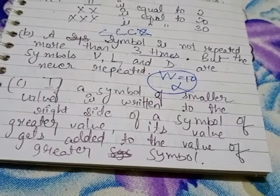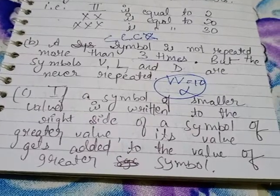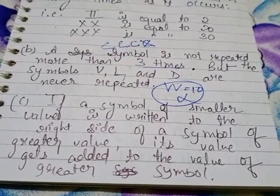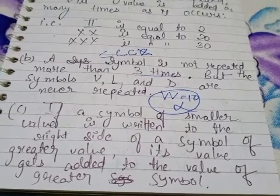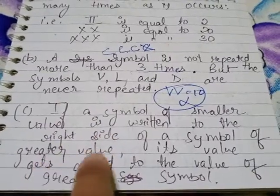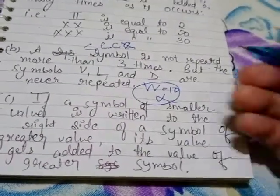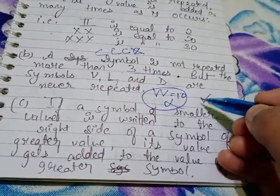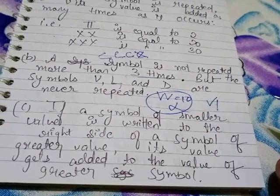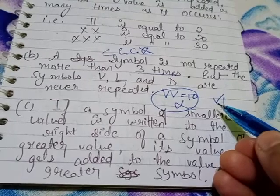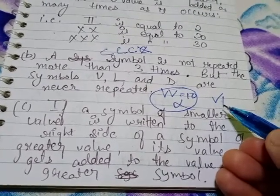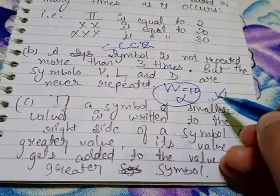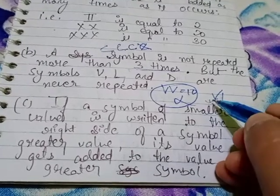The third rule: if a symbol of smaller value is written to the right side of a greater value, its value is added. For example, V is the greater value (5). If I write I — which is smaller — to the right side of V, that smaller value is added to the bigger value: 5 plus 1 equals 6.